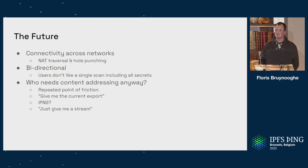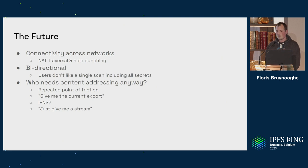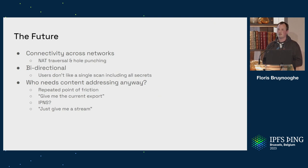Q: What libraries and prior art did you look at for solving local network discovery, and is anything still in the running for hole punching or will it be custom? A: Obviously libp2p — that's also where we initially looked for getting all local addresses, though we ended up using a different dependency. Regarding hole punching, what we're looking at now is the model that Tailscale uses, and also ZeroTier — they both have hole punching problems and NAT traversal. So we're looking at them to figure out what our solution should look like.